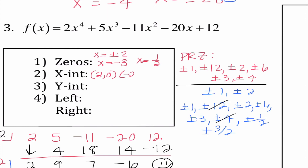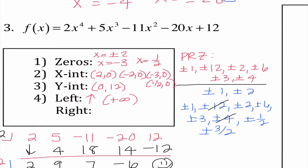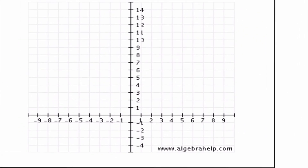I know I'm in good shape because we found 4 different zeros: x equals plus or minus 2, x equals negative 3, and x equals 1 half. These are all zeros because they're all real numbers. My y-intercept is 12. Left-hand and right-hand behavior: negative 10 to the fourth power is positive times a positive, so it's going up to positive infinity. If I put in positive 10, 10 to the fourth is positive times 2 is positive, so it's going up to positive infinity.